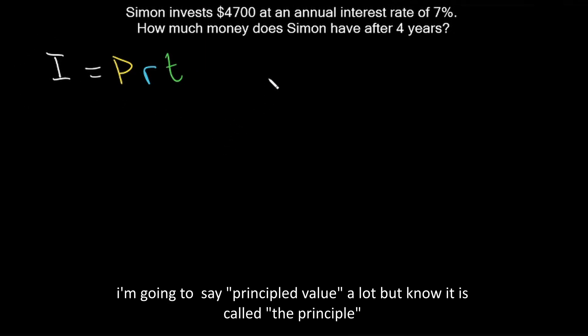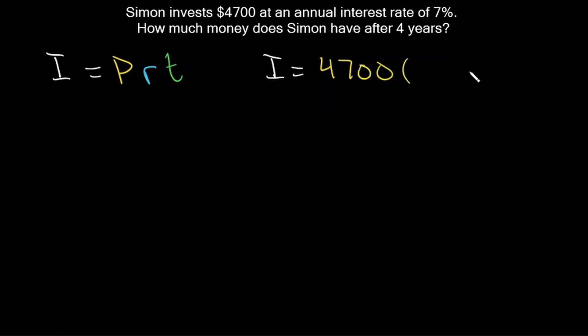So let's calculate our interest here. What is our principal value? Our principal is $4,700, and we multiply that by our interest rate, which is 7%, but we need it in decimal point. So 7% as a decimal is 0.07. Then we multiply that by our time. It says this is an annual interest rate, so our time is in years, and we have 4 years. So we multiply by 4.